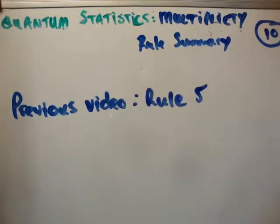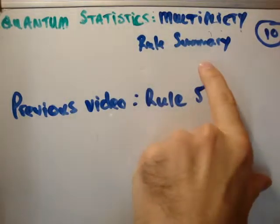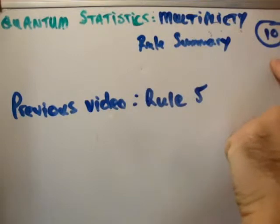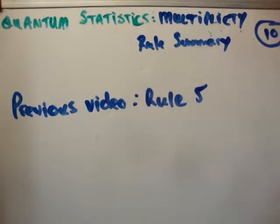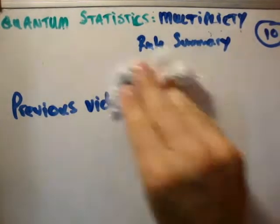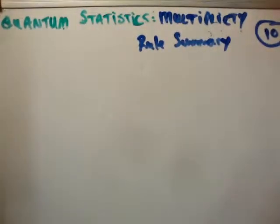Okay, in this video I'm going to continue on with my tutorial videos in quantum statistics. This is the rule summary for multiplicities. We're on lecture number 10, and the previous video was rule number 9 for multiplicities. So I just want to summarize what we've seen up to now.